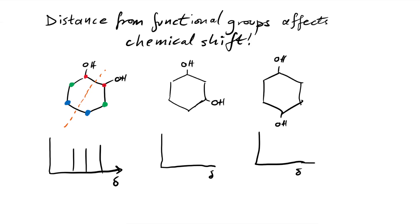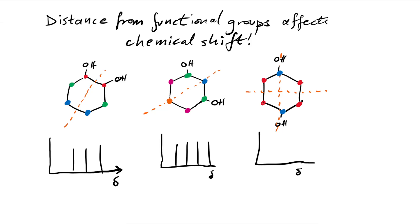For cyclohexane-1,3-diol, the line of symmetry goes through the carbons. The carbon between the two OH groups is in its own unique environment, the two carbons bonded to OH are the same, the next two are the same distance from the hydroxyl groups, and the final carbon is also unique. So we should see four peaks. For cyclohexane-1,4-diol, there are actually two lines of symmetry, and the four non-OH carbons are all in identical environments. So we should only see two peaks. Lines of symmetry in molecules — this applies to any symmetrical molecule, not just those with aromatic rings.